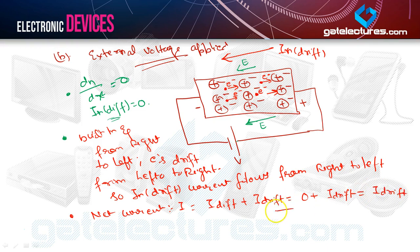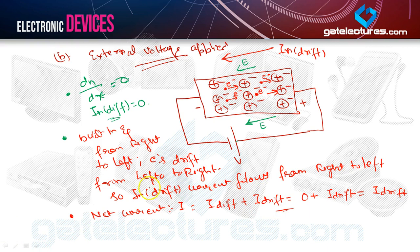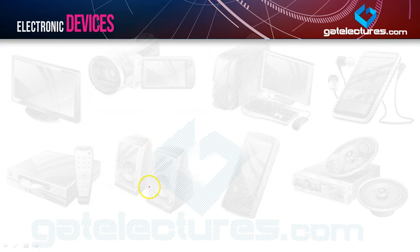So for a uniformly doped semiconductor with external voltage applied, the main current which flows in the semiconductor is due to the drifting of the charge carriers.